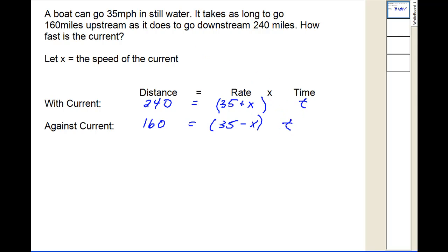Now these two t's are the same. So if we take a look at our distance equals rate times time formula, if we solve this for t by dividing both sides by r, we would have t equal to distance divided by rate. Now the reason we want to use this is because we know that these two t's are the same. So the two distances divided by the rates must be the same.